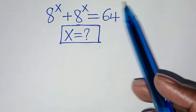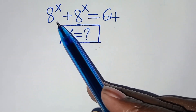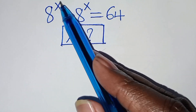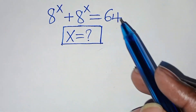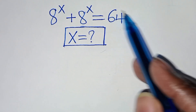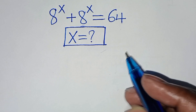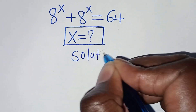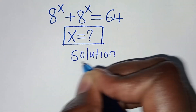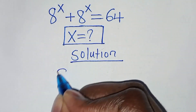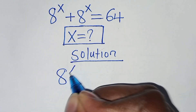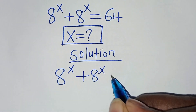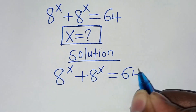Hello everyone, you are welcome to solve this nice exponential equation, which is 8 to the power of x plus 8 to the power of x, this is equal to 64. So what is the value of x? Let's present a solution from here. We have 8 to the power of x plus 8 to the power of x, this is equal to 64.